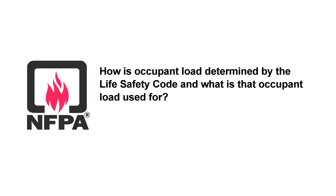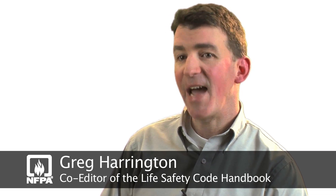How is occupant load determined by the life safety code and what is that occupant load used for? Occupant load in the life safety code is determined by one of two ways. The first way is you can determine your occupant load based on factors specified by the code — occupant load factors given in terms of square feet per person or square meters per person — and you would apply that factor based on the use of the space over the area of that building or portion of the building.